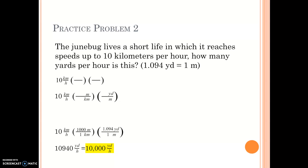Remember: when the 1 is on the bottom, you multiply; when the 1 is on top, you divide. In the calculator, type 10 times 1000 times 1.094. The calculator answer is 10,940 yards per hour. But 10 kilometers per hour has only one significant figure, so I must round 10,940 to one significant figure. My final answer is 10,000 yards per hour.